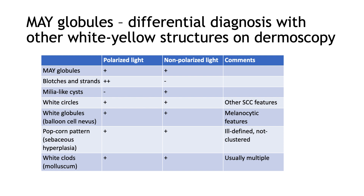Then we have the popcorn pattern seen in sebaceous hyperplasia, which is seen with both lights — the key here is that the globules are ill-defined, they are not clustered, and the lesions are usually multiple. Finally, we have the white clods of molluscum contagiosum, which are also seen with both lights, but molluscum contagiosum lesions are usually multiple.